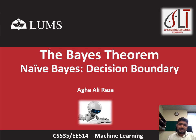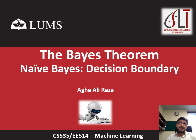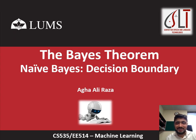Let's see our next topic. We will quickly look at the decision boundary for the naive Bayes algorithm and understand what it looks like. We have already said that our algorithm is a linear classifier, so it makes sense that the decision boundary should be a straight line — but is it always a straight line, or could it be piecewise linear or something more?